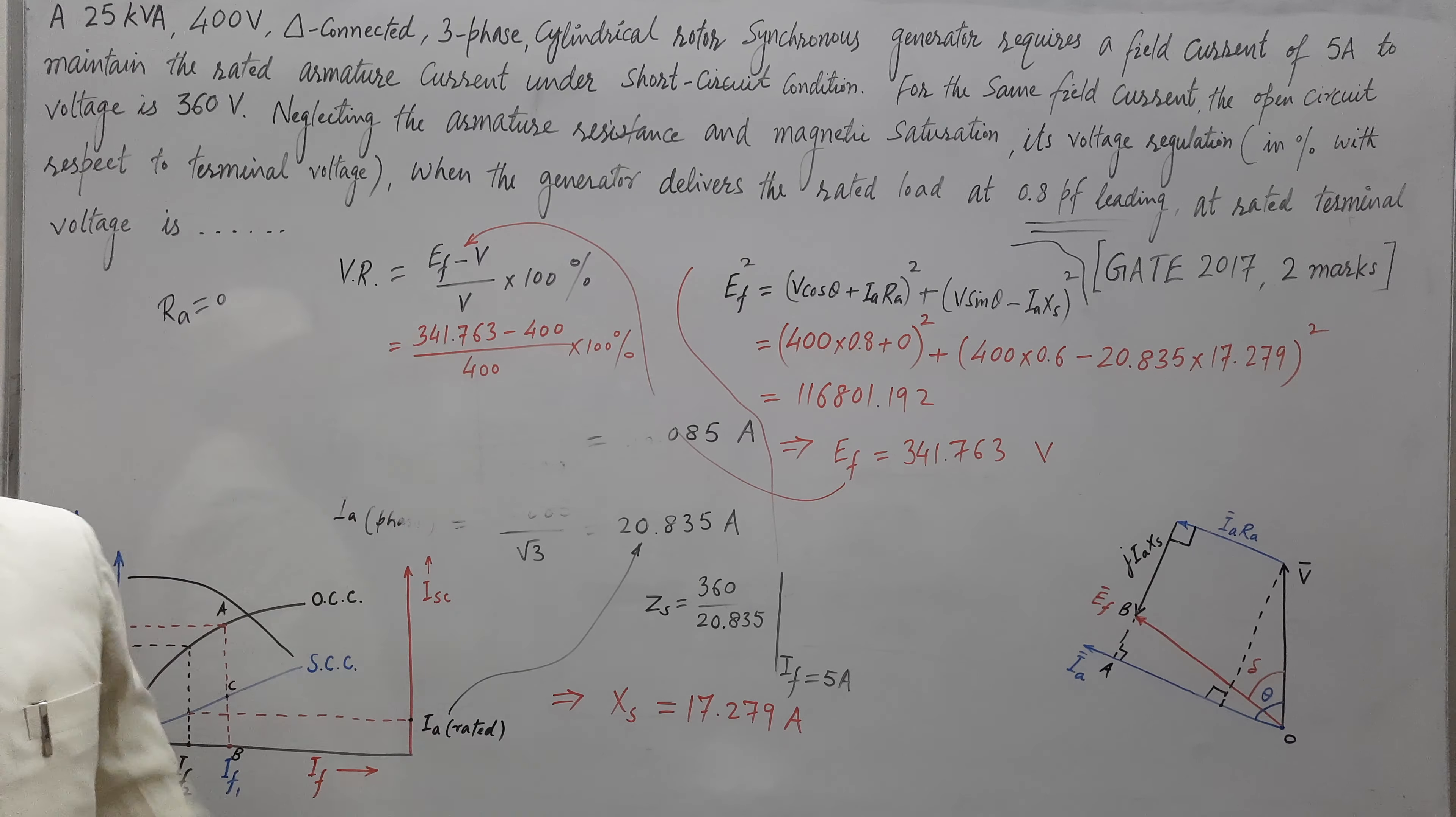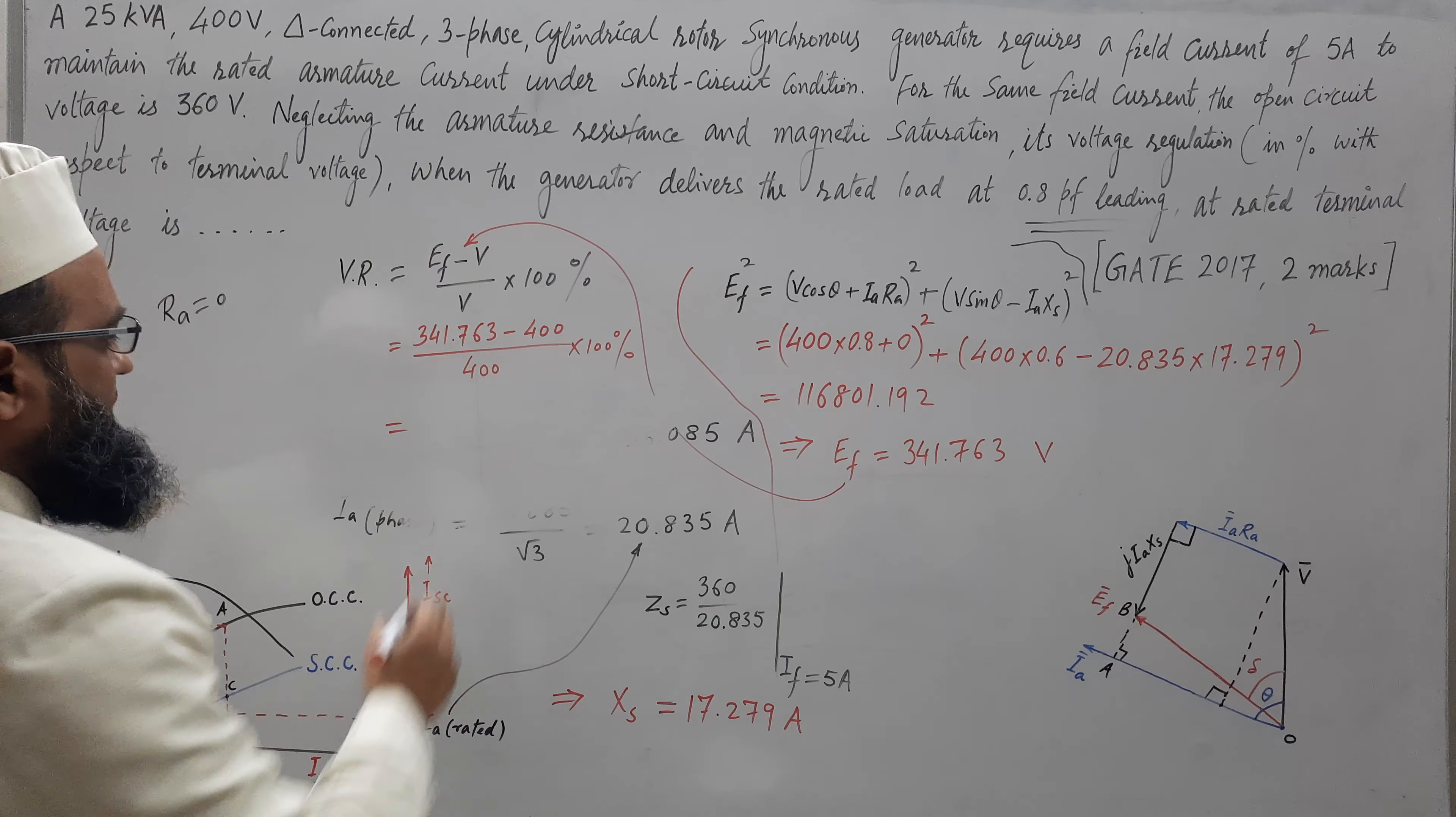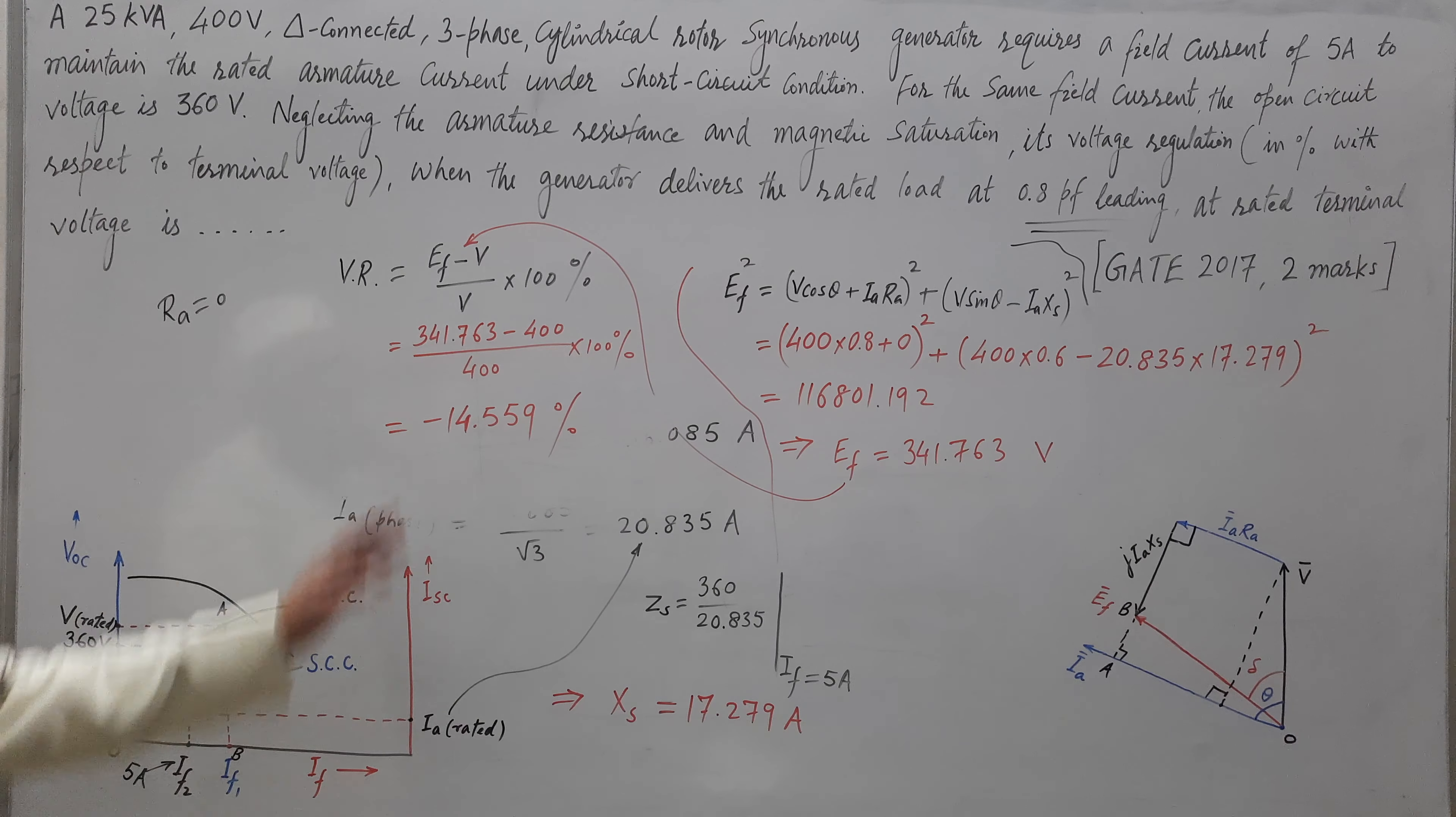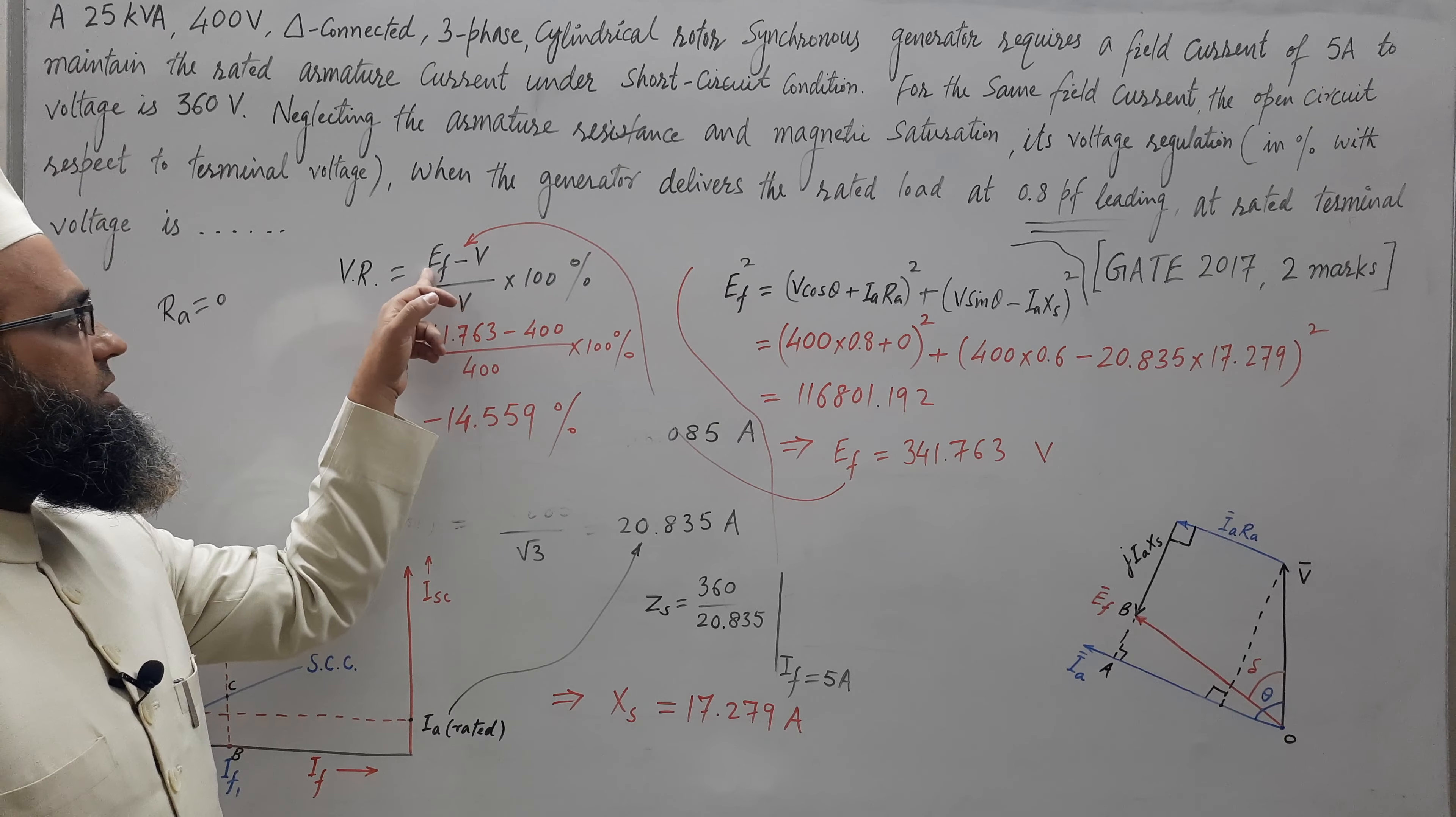Now this difference is coming out to be negative because this is leading power factor. So, this is coming out to be minus 14.559 percent. This negative sign is coming because of leading power factor. That is why we are getting terminal voltage at full load even higher than the EF.